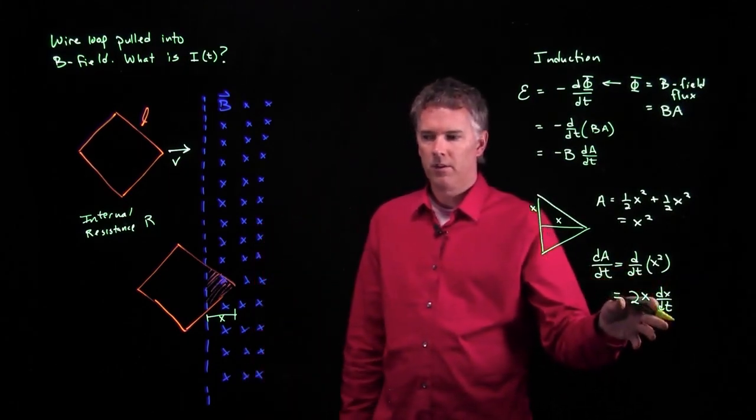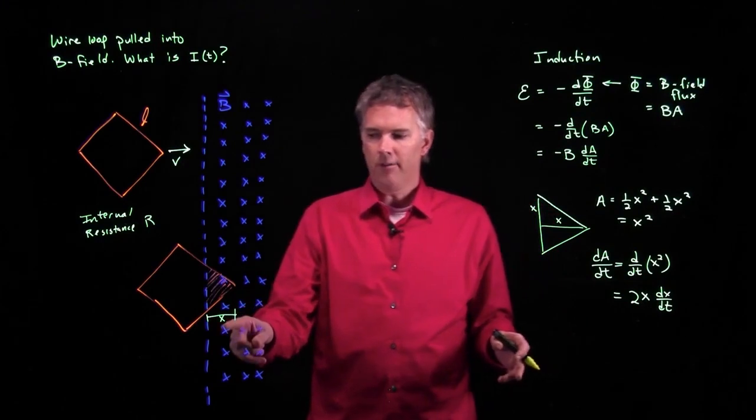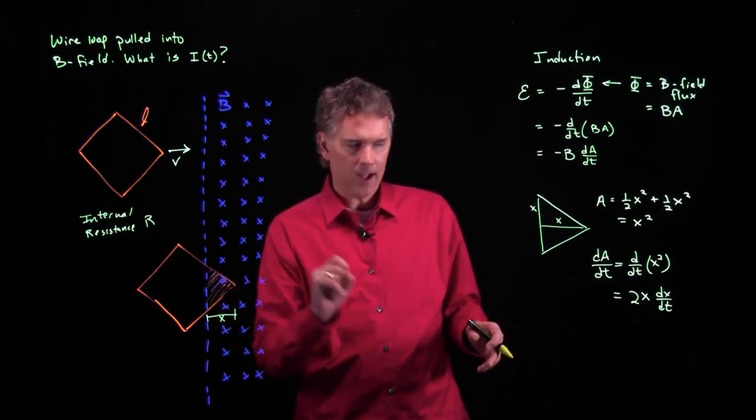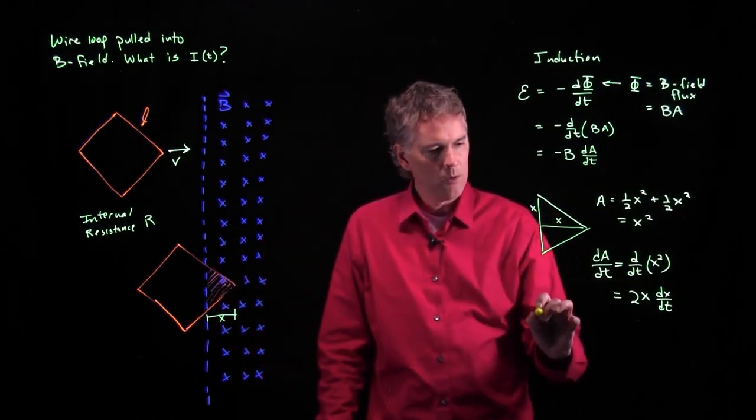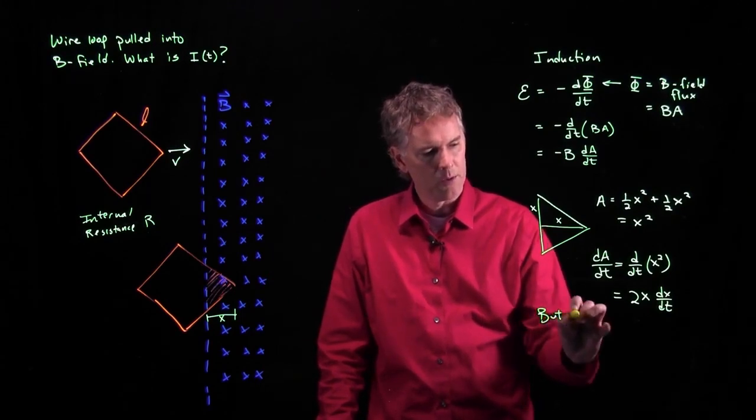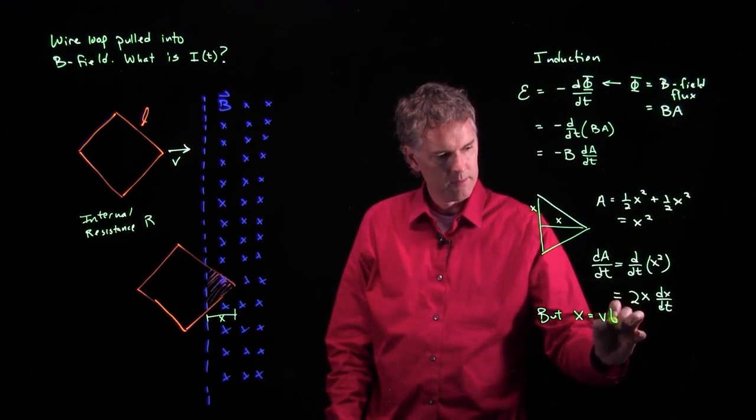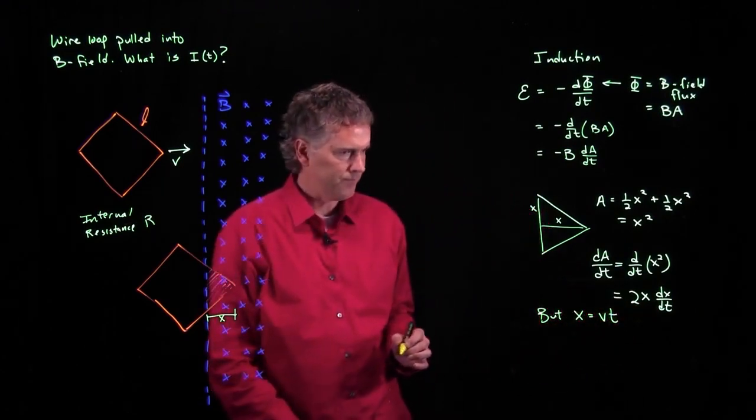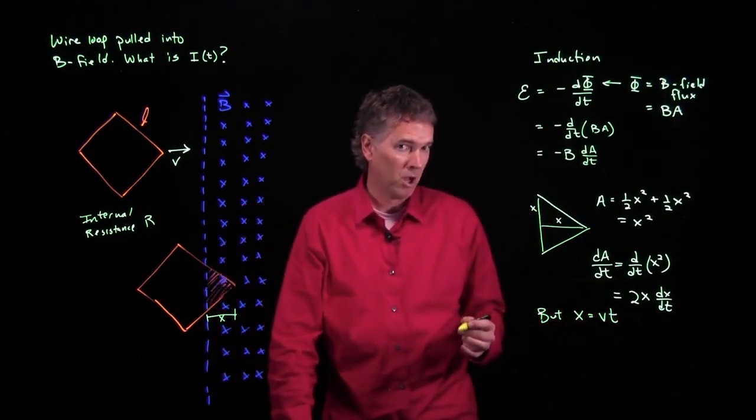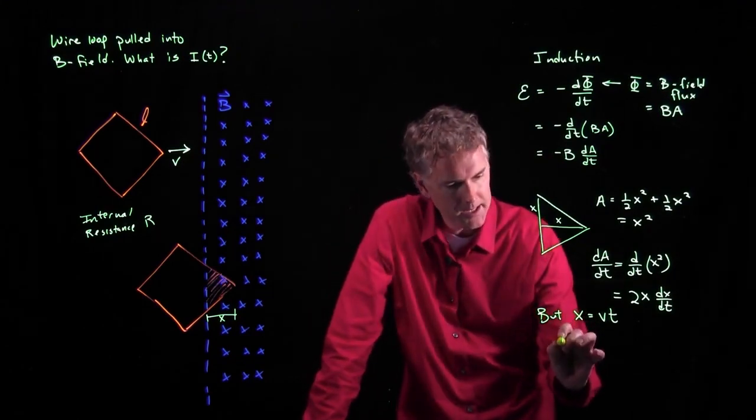But I know what all those things are. If this is the distance X, I know that X is just equal to how fast it's moving times time. So what does dA/dt become?